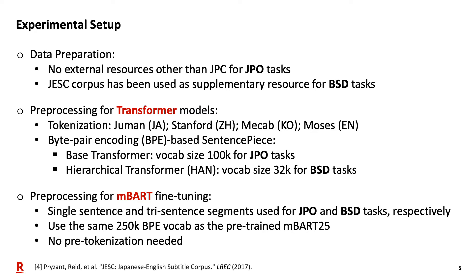Here is our experimental setup. In terms of data preparation, we didn't use any external resources other than JPO corpus for JPO tasks. However, due to the limited number of training documents of BSD corpus, we implement the Japanese-to-English subtitle corpus JESC corpus as supplementary sources for the BSD task. We preprocess for the transformer models using pre-tokenization and tokenization. For the base transformer model and hierarchical transformer model, we pre-tokenized for Japanese, Chinese, Korean, and English. We also applied byte-pair encoding BPE-based sentence piece model for tokenization. Finally, we obtained vocabulary size of 100K per JPO task for the basic transformer model and vocabulary size of 32K per BSD task for the hierarchical transformer model.